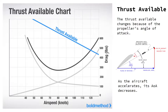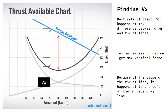Why does that matter? It matters because this is what we need to find VX. You would think that VX would be at the point of minimum drag, because minimum drag means we're working against less. But actually, because of this curve, you'll find that the maximum difference between thrust available and thrust required — the drag — is slightly to the left of the drag curve. And this is how we find VX.